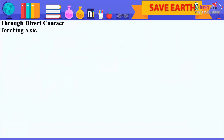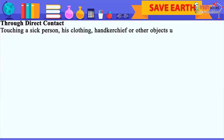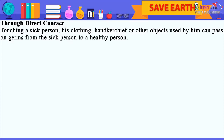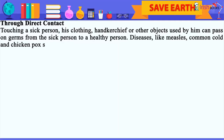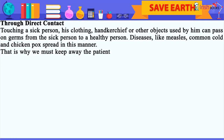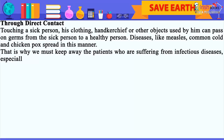Through direct contact: Touching a sick person, his clothing, handkerchief or other objects used by him can pass on germs from the sick person to a healthy person. Diseases like measles, common cold and chicken pox spread in this manner. That is why we must keep away the patients who are suffering from infectious diseases, especially from children because children catch diseases even more quickly.